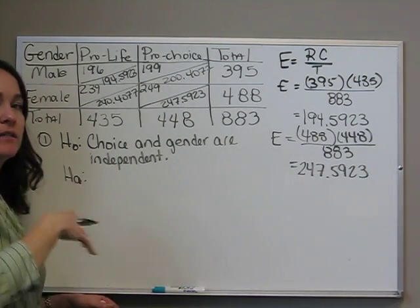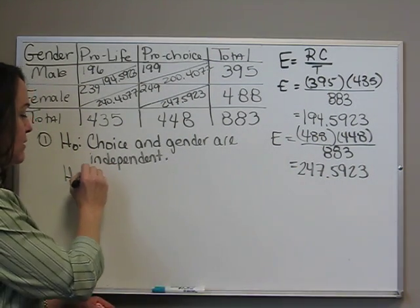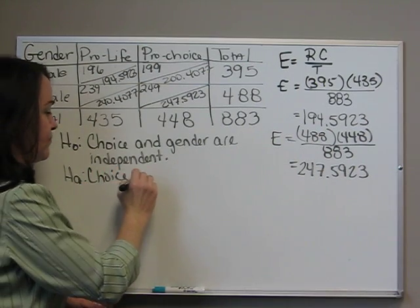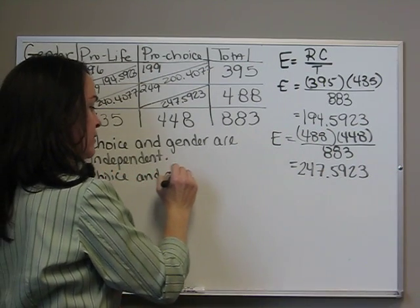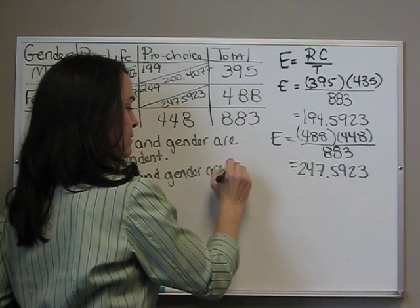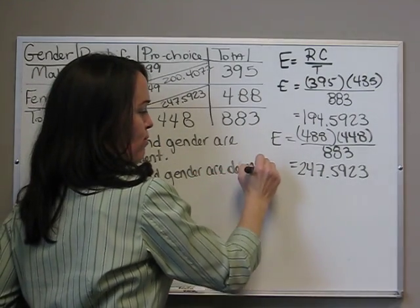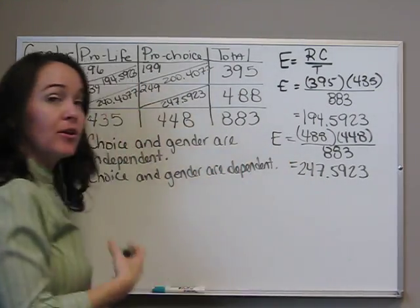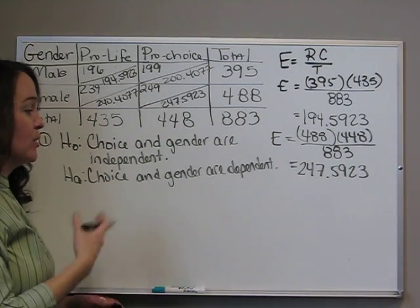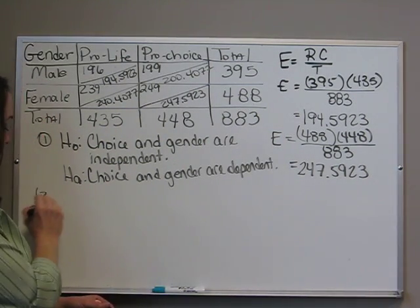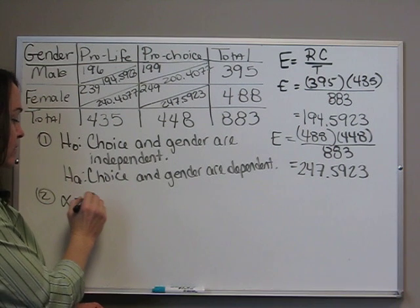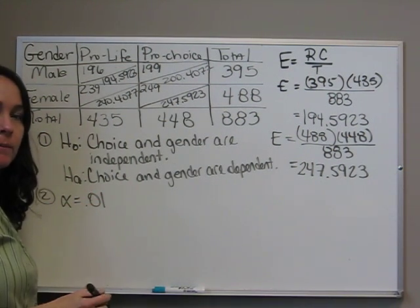The alternative is the opposite, that they are dependent. Choice and gender are dependent, or that there is an association between choice and gender. We're going to test at the 1%, so alpha, our second step, is 0.01.